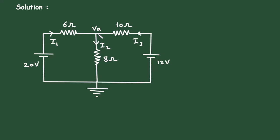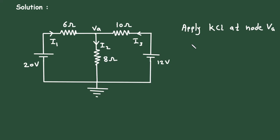Now let's apply KCL at node VA. KCL stands for Kirchhoff's current law. According to KCL, the summation of all the currents entering a node is equal to the summation of all the currents leaving the node.